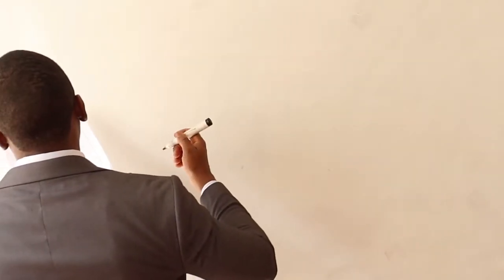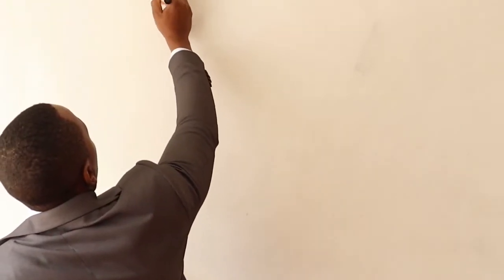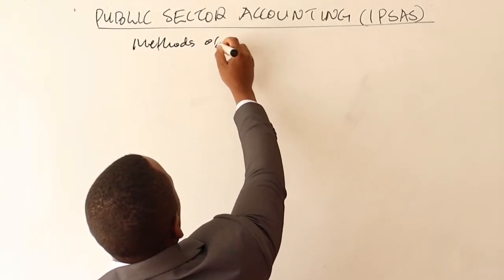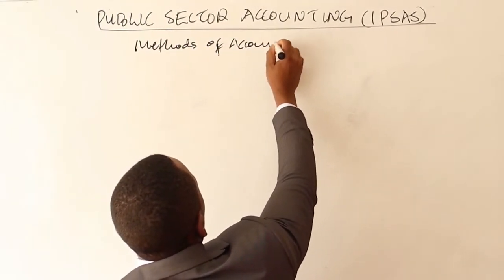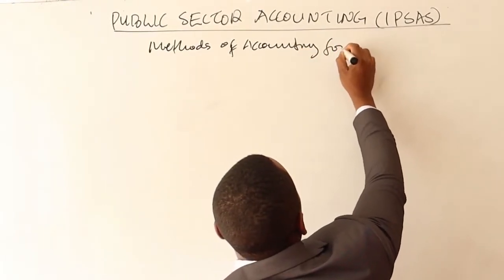One thing to notice is the difference between the public sector and the private sector. For the private sector, they operate with an objective of making a profit. But for government entities, they are there not to make profit but to offer services to members of the public. That's the key difference between the two sectors.